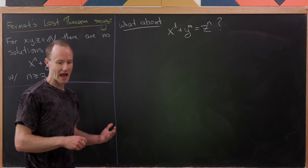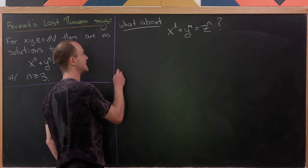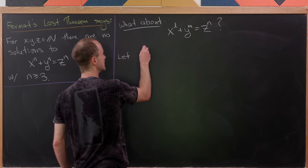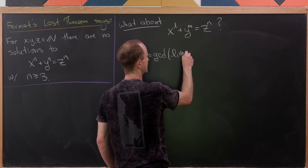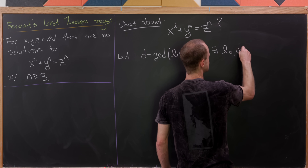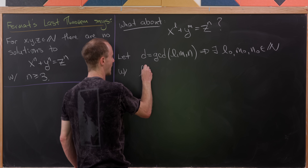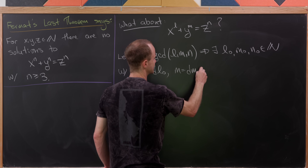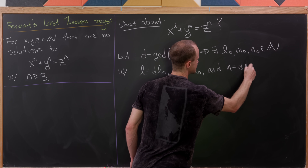The trick is to consider the GCD of l, m, and n — in other words, the greatest common divisor. So let's let d equal the GCD of l, m, and n. That means there exist natural numbers l0, m0, and n0 with l equals d times l0, m equals d times m0, and n equals d times n0.